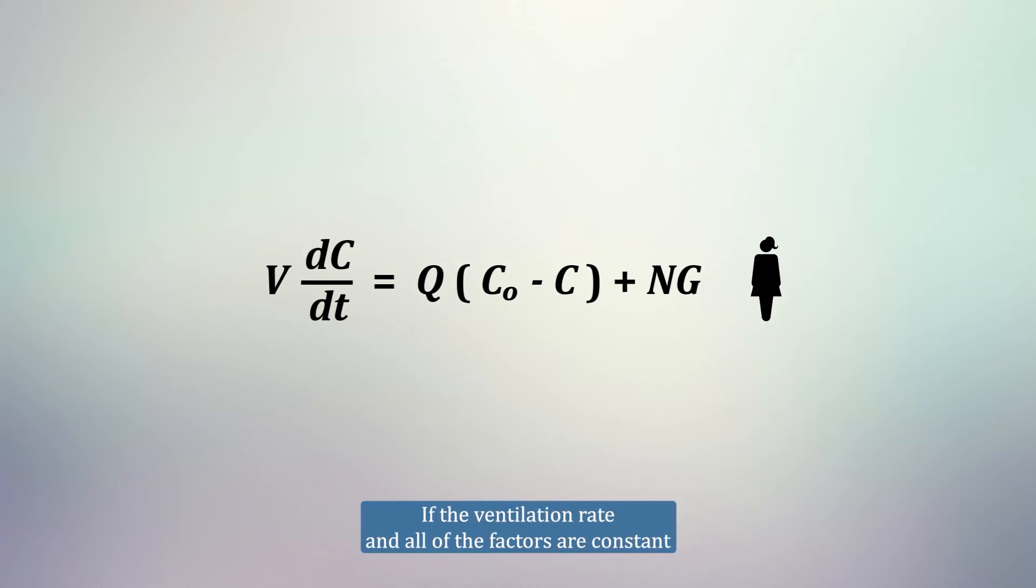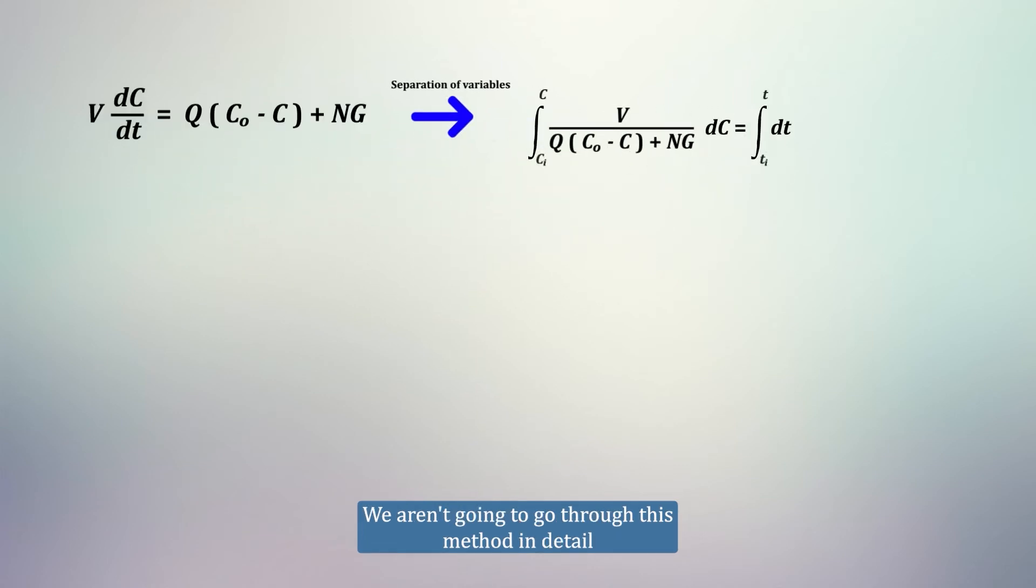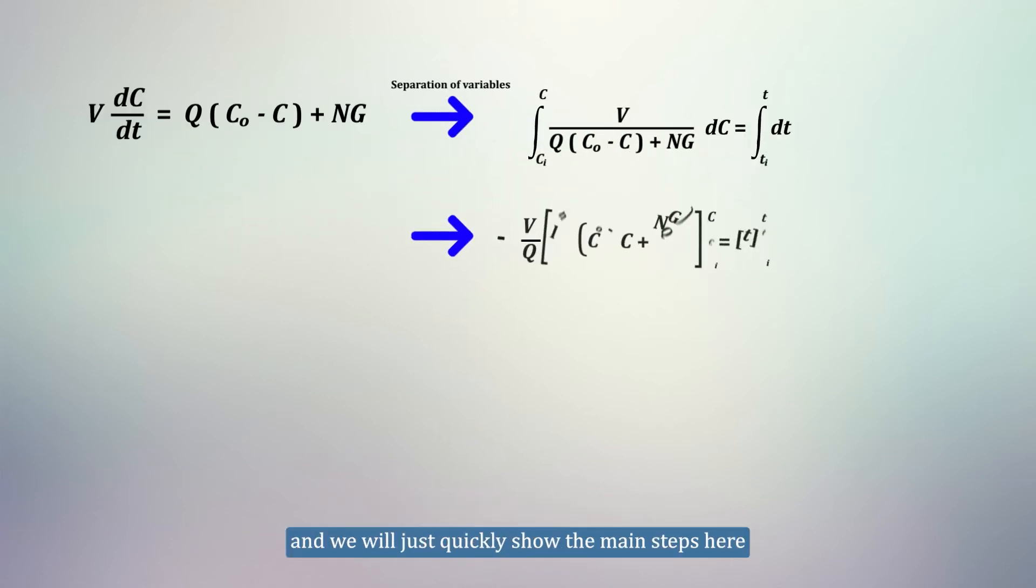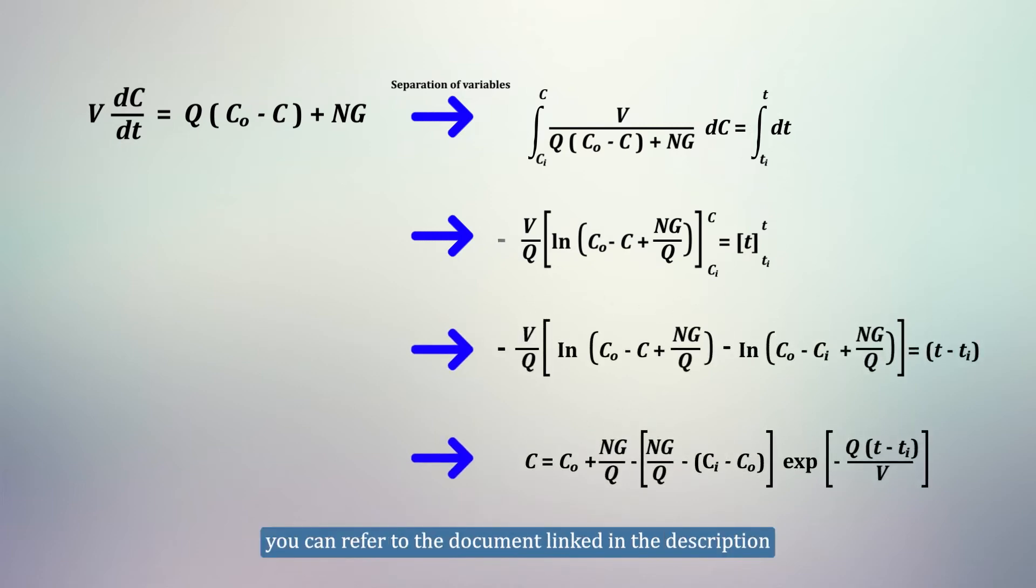If the ventilation rate and all other factors are constant, we can use the separation of variables method to solve this. We aren't going to go through this method in detail, and we will just quickly show the main steps here. But if you want to learn more about how to solve this, you can refer to the document linked in the description.